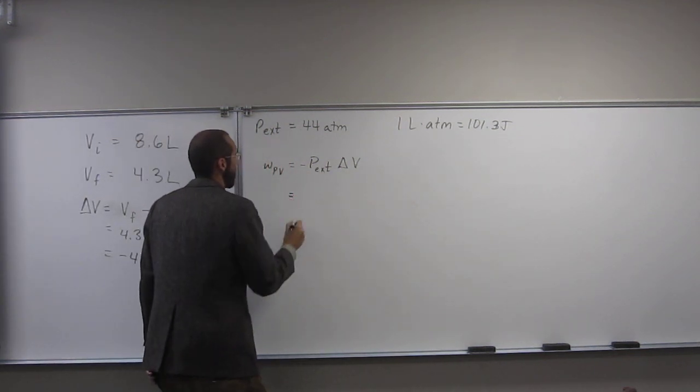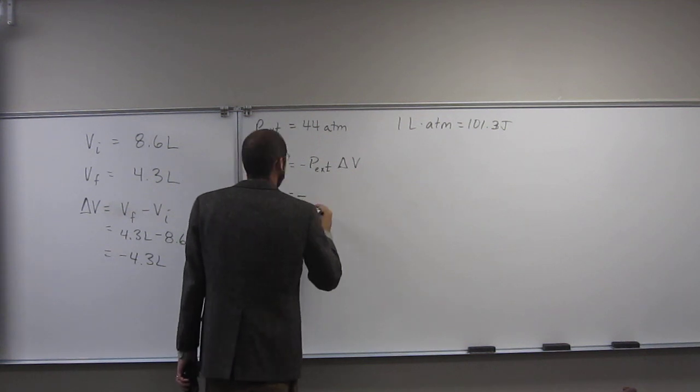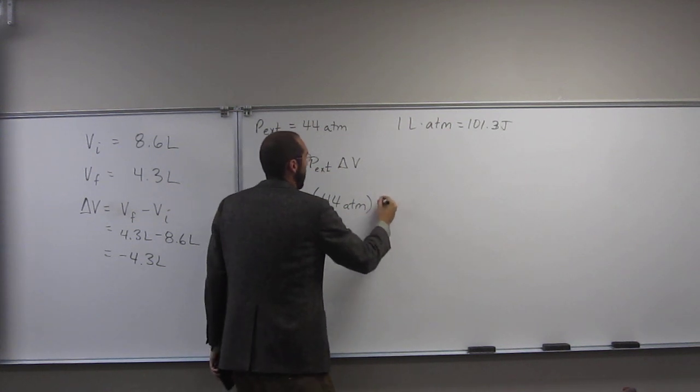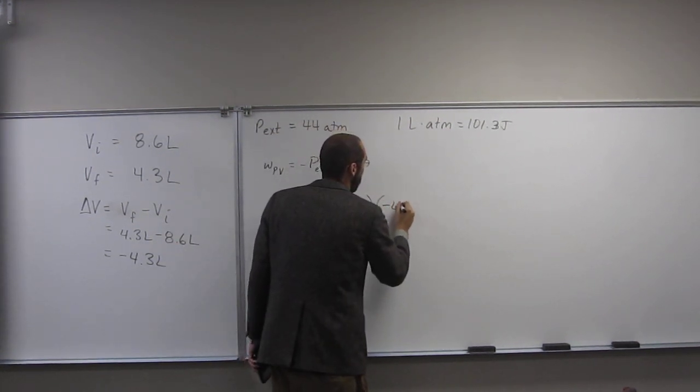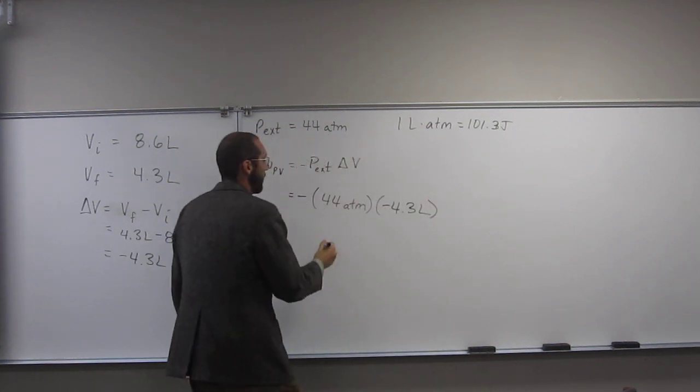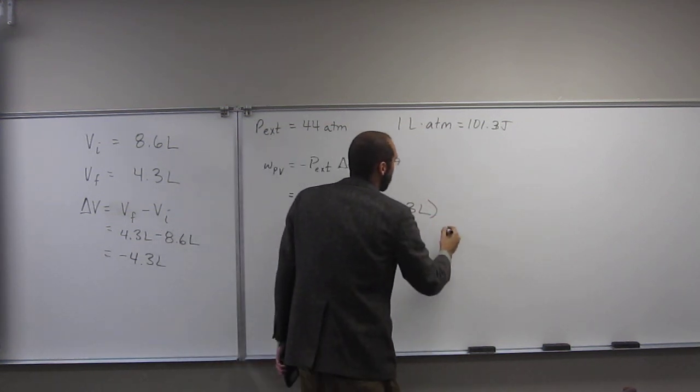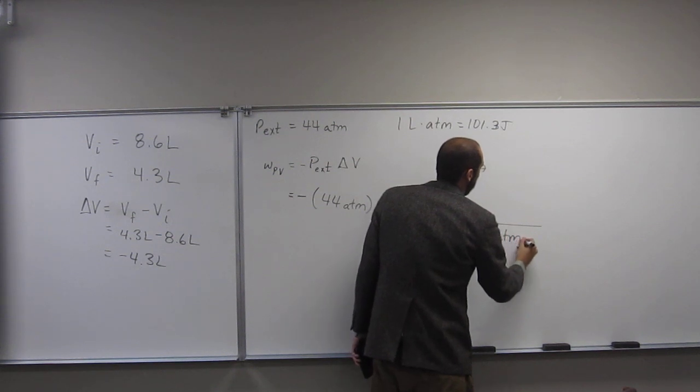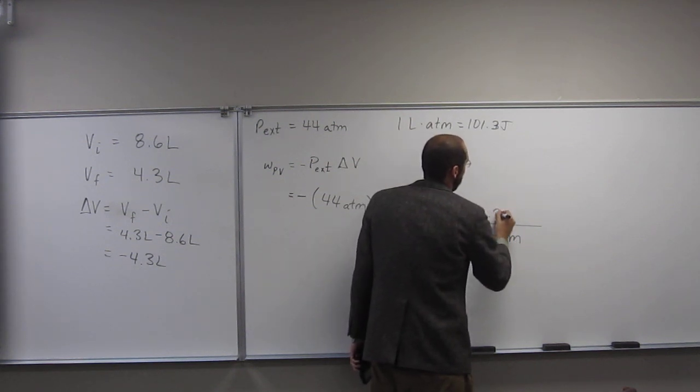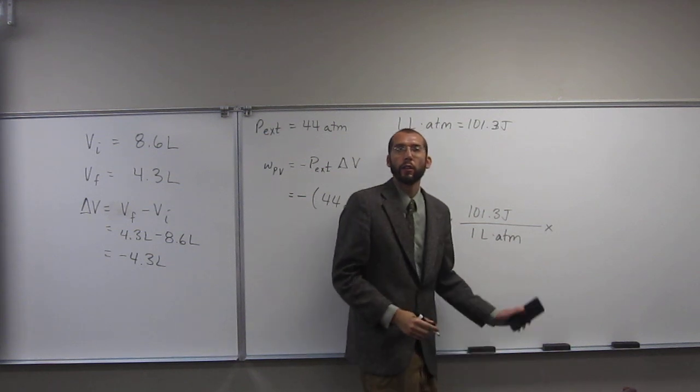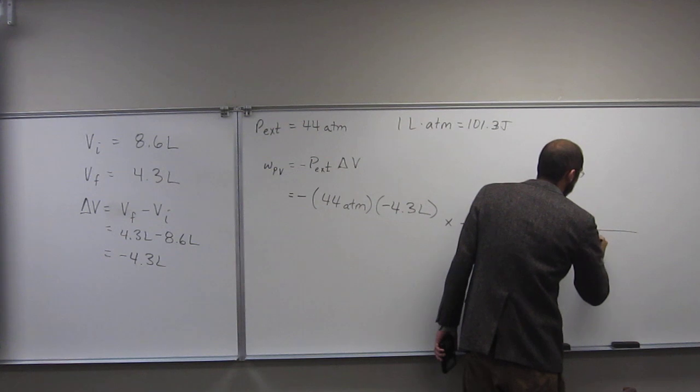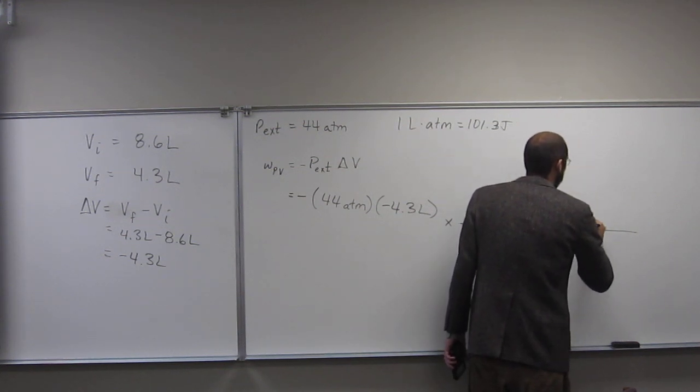So in order to do this, just plug and chug. So we've got 44 atm. And we've already done the calculation for the volume. So atm liter, we can already, if we want to, convert to joules. So 1 liter atm is 101.3 joules. But it asks us to do it to kilojoules, right? So we've got to do one more. So 1000 joules, 1 kilojoule.